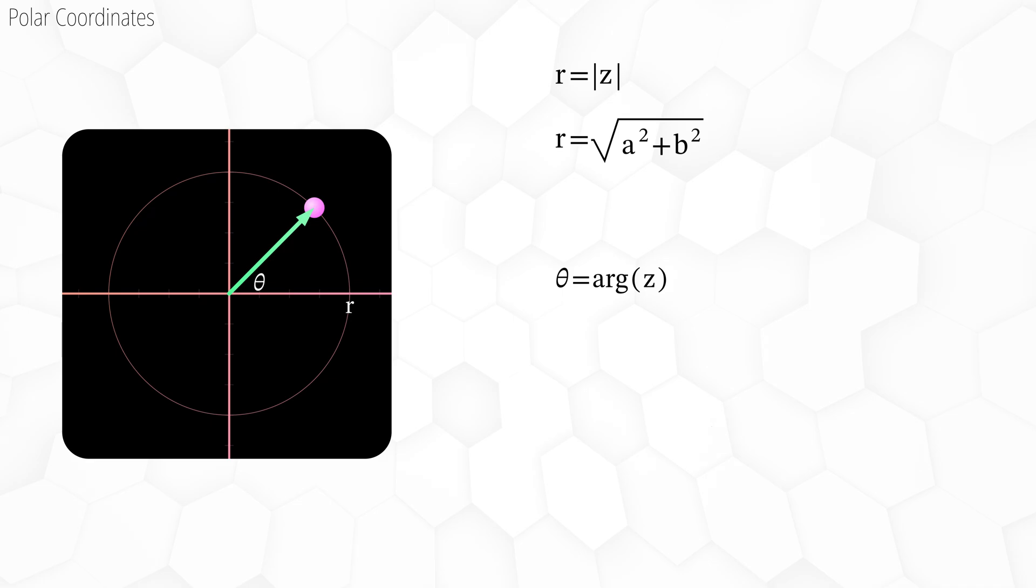Theta is the angle of our point. It is always measured anti-clockwise from the positive real axis. This value is quite important in complex analysis, so we give it a special name. It is called the argument, which we will write with a special function, theta equals arg z.